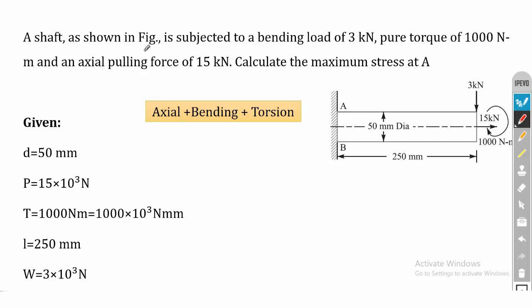A shaft as shown in the figure is subjected to a bending load of 3 kilo Newton, a pure torque of 1000 Newton meter, and an axial pulling of 15 kilo Newton. We have to calculate the maximum stress at point A.